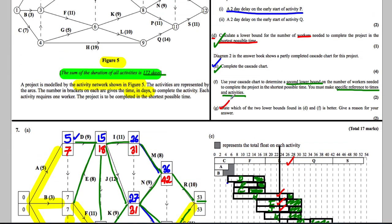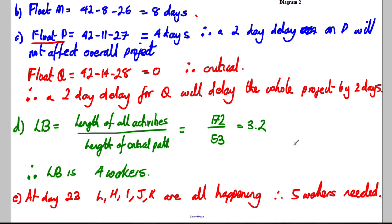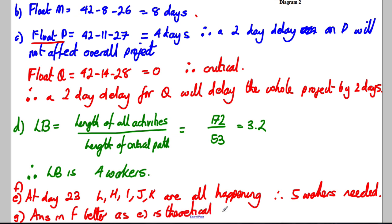For part G, state which lower bound is better. The answer in F is better: part D gives a theoretical lower bound based purely on the numbers, whereas F gives the actual lower bound based on the reality of the activity ordering in the cascade chart. The answer in F is the true lower bound.